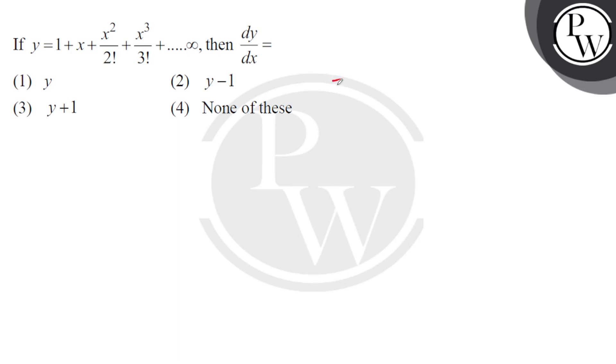So basically if we differentiate this, 1 is 0 and x is 1. x squared is 2x, so 2 and 2 cancel. So that is basically we have x left.